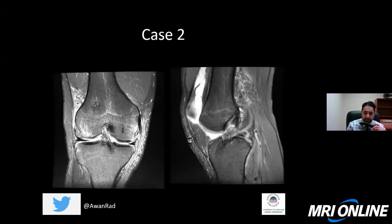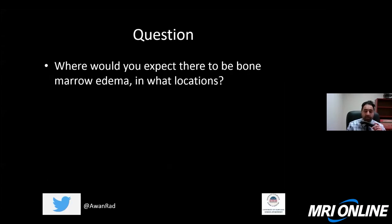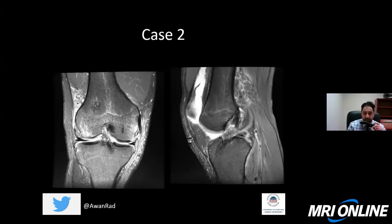Case number two is another image through a patient that's had an ACL reconstruction. You can see the interference screws here. There's an obvious abnormality on the coronal and sagittal T2 fat-sat-weighted images through the knee. The question is: where would you expect there to be bone marrow edema in the knee and in what locations, based on the finding that you're seeing in this patient with status post ACL reconstruction?